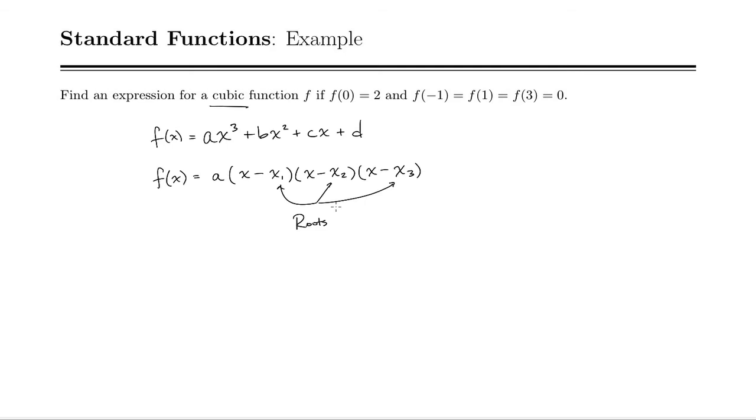Meaning the places where the function equals 0. So they've told us x1, x2, and x3 here. Because f of negative 1 is 0, f of 1 is 0, and f of 3 is 0. So those are our roots. So I can immediately jump to a times x minus negative 1 times x minus 1 times x minus 3.